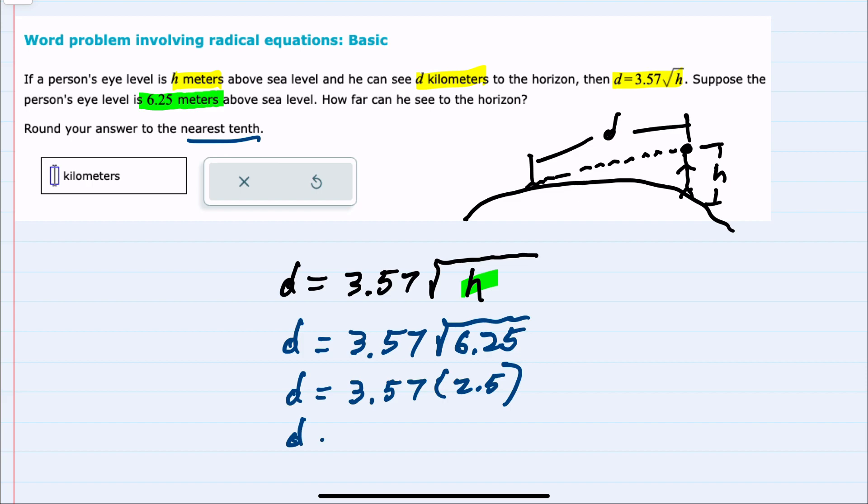And doing this multiplication, 3.57 times 2.5 in a calculator gives me 8.925.